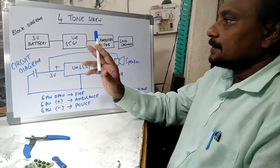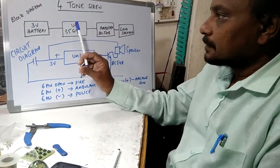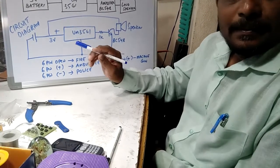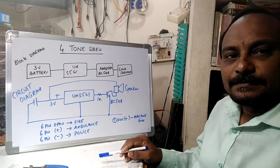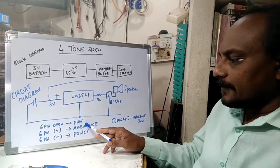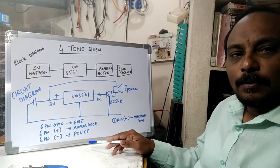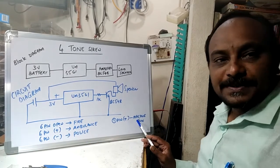Hello everyone, this is one of the circuits which will give a siren circuit of 4 different sounds. You can enjoy the sounds of fire, ambulance, police, and also machine gun.